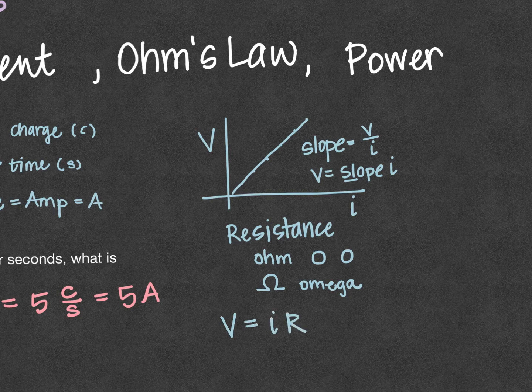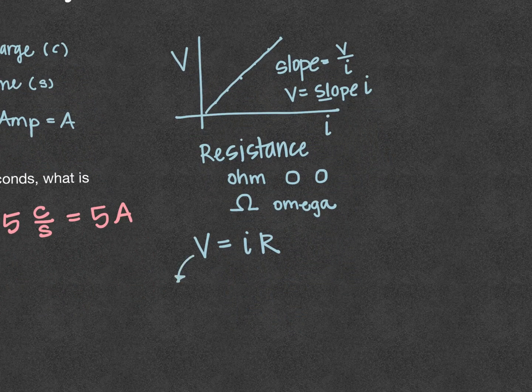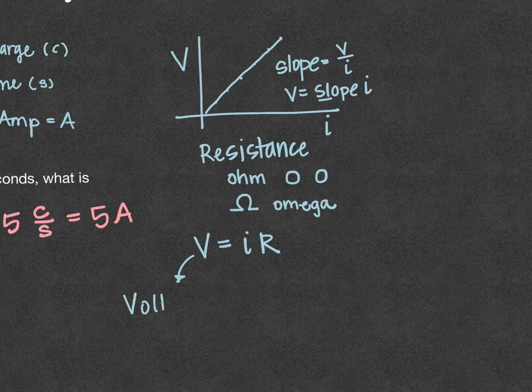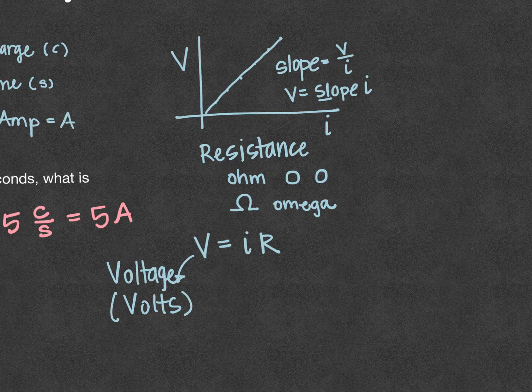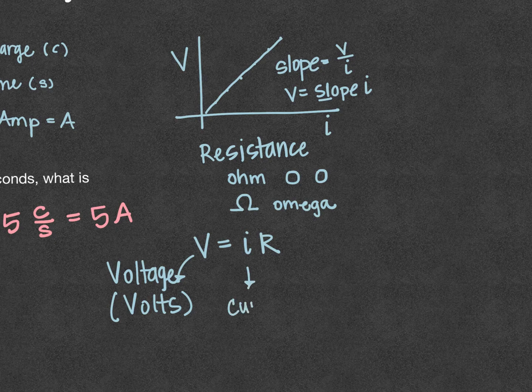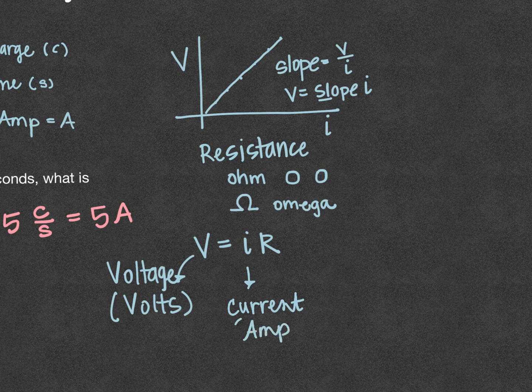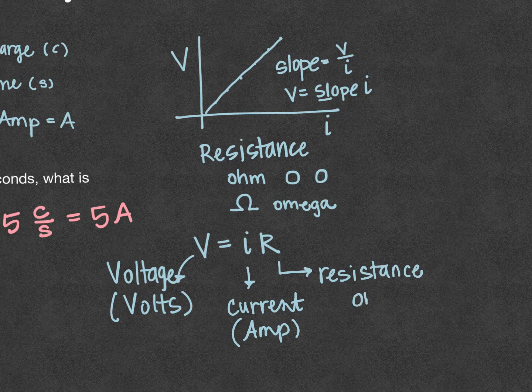So Ohm's law is V equals IR, where V measured in volts is our electric potential difference or voltage. This was first created by Alessandro Volta. The I represents current and current is named for Andre Marie Ampere, so in amps. R is our resistance, and it is measured in Ohms for George Simon Ohm.